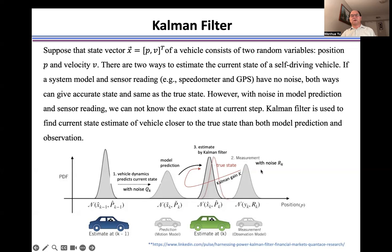If there is no noise in the model, the two results are the same and equal to the true state. However, in a noisy environment, the two states are different and different from the current true state. Based on these two results in the noisy environment, the Kalman filter can generate a better estimate than both the model prediction and the measurement.